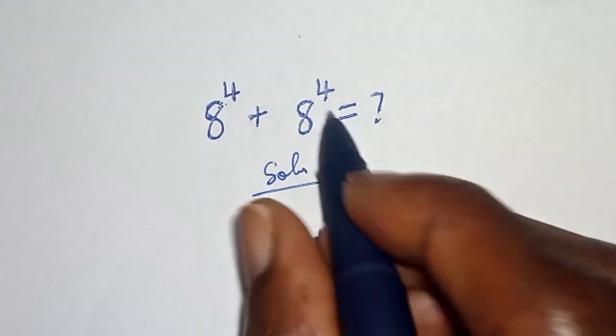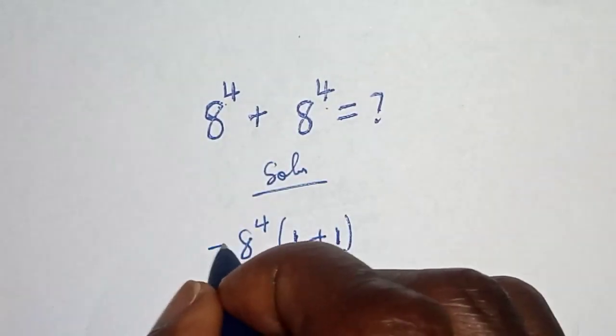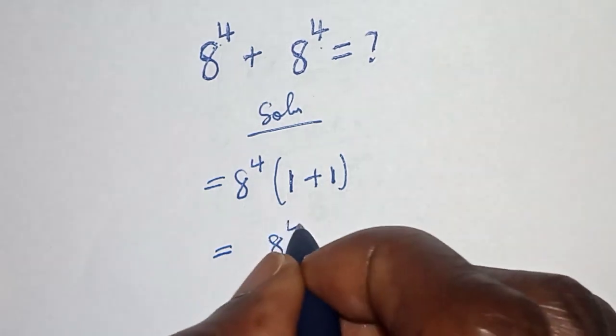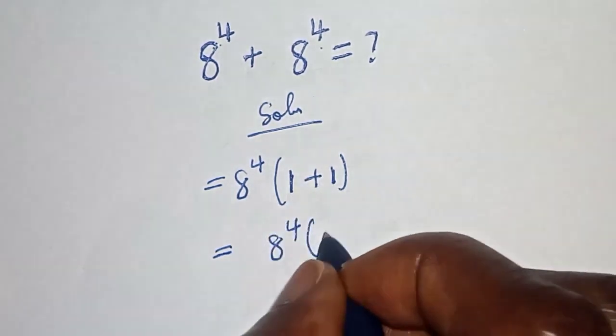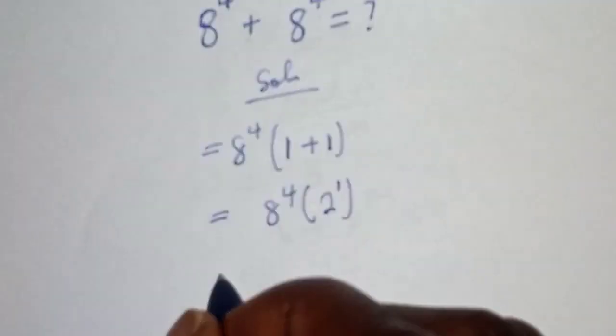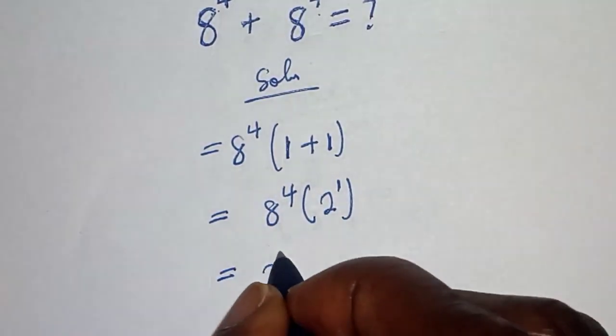This is equal to 8 raised to power 4, times bracket (1 plus 1). This is 2, raised to power 1. 8 raised to power 4 can be written as 2 raised to power 3, all raised to power 4.